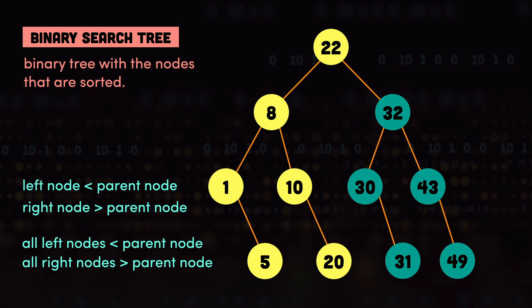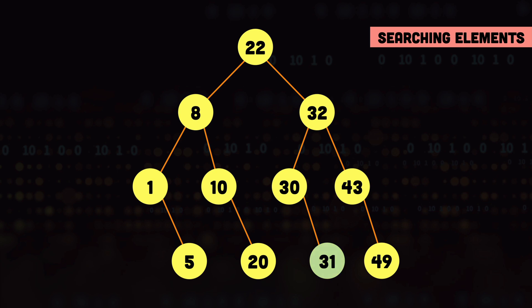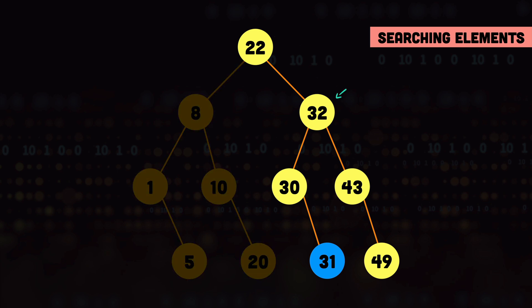Now that we know what binary search trees are and their properties, let's see how we can search for a node. Let's say we have this tree and need to find 31. We start from the top and compare with 31: 31 is greater than 22 so we move to the right. Next we have 32 — 31 is smaller than 32 so we move left. Then 31 is greater than 30 so we move right, where we find the node we are looking for.